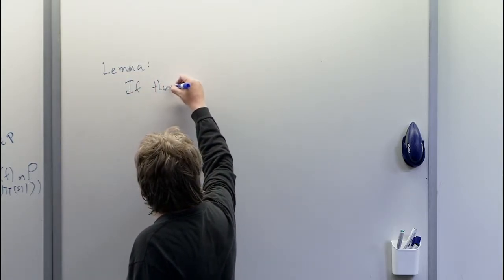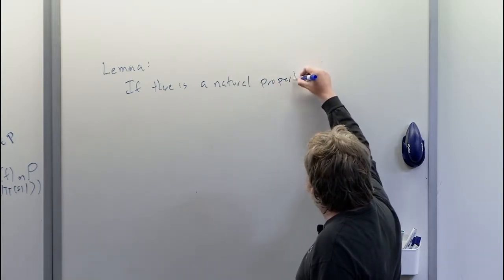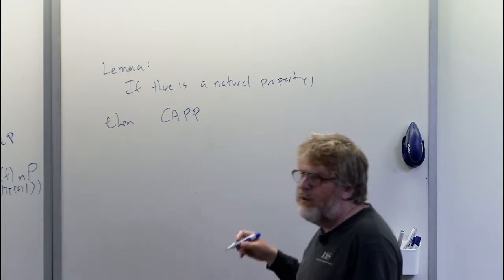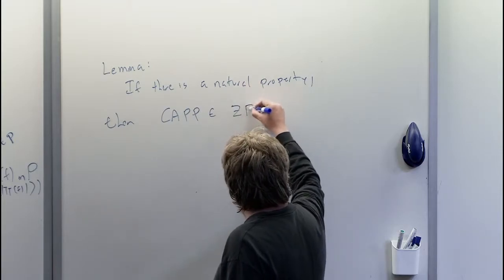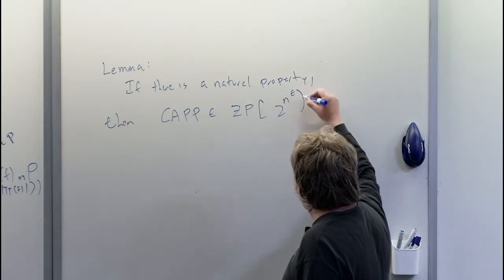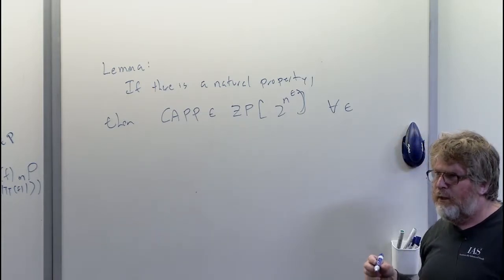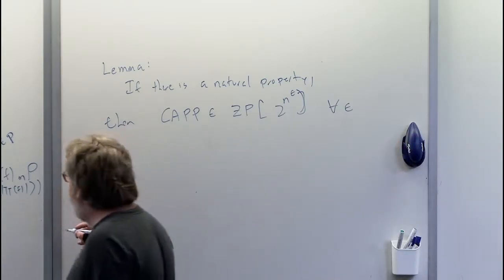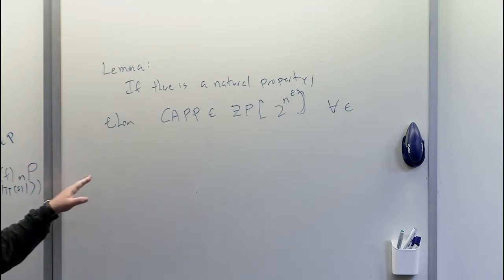If there is a natural property, then the circuit approximation problem (CAP) that's hard for BPP would be in zero-error probabilistic time 2 to the N to the epsilon for every epsilon. Here's why: remember the diagram from Tuesday's lecture — we had a generic way of taking a function F and mapping it to a pseudorandom generator g sub F, and the harder F was, the smaller the seeds for the pseudorandom generator were.